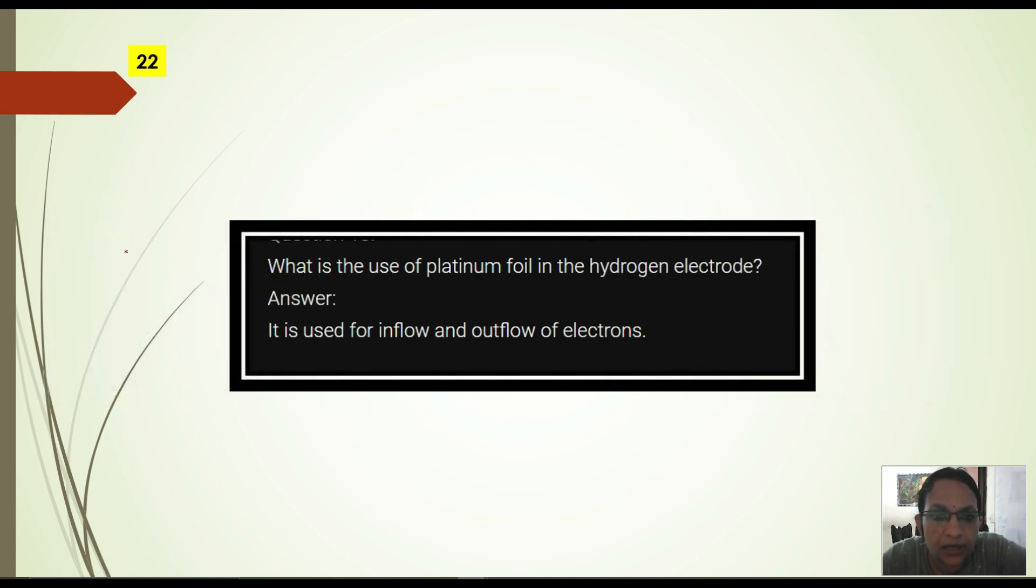What is the use of platinum foil in hydrogen electrode? Platinum foil in hydrogen electrode is used for inflow and outflow of electrons.